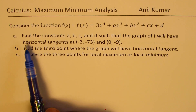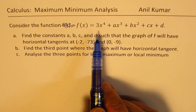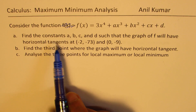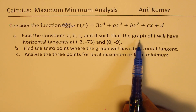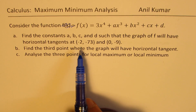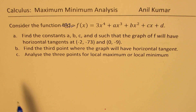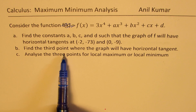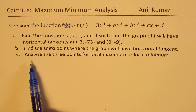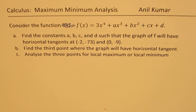The question is: consider the function f(x) = 3x⁴ + ax³ + bx² + cx + d. Find constants A, B, C, and D such that the graph will have horizontal tangents at (-2, -73) and (0, -9). Part B is find the third point where the graph will have a horizontal tangent. Part C is analyze the three points for local maximum or local minimum.